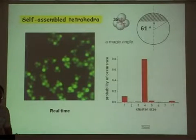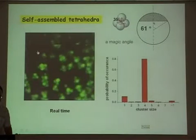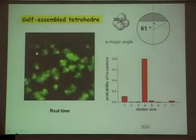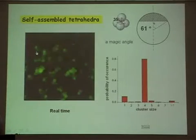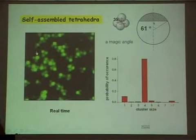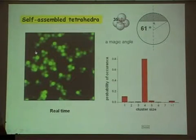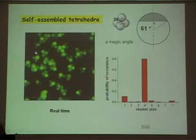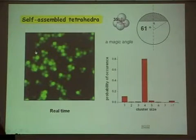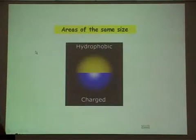Here is an example of tetrahedra that form spontaneously in extremely monodisperse form, moving around by Brownian motion. She quantified the results: there was still some abundance of monomers due to imperfections in preparation, but about 80% of the sample was self-assembled tetrahedra.